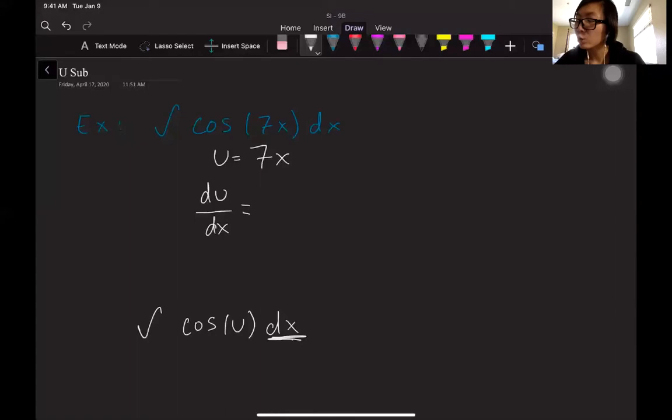Here's where we want to think about actual substitution. I'm gonna substitute u for 7x. That means I want to substitute something for dx as well. This is why I have du/dx. du/dx is going